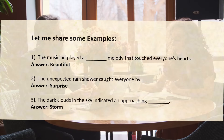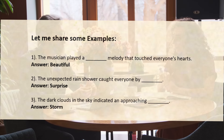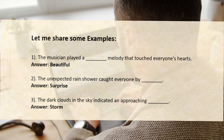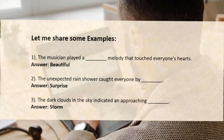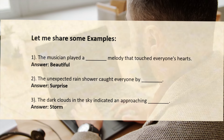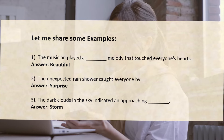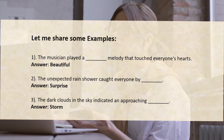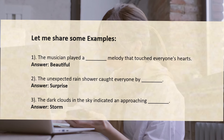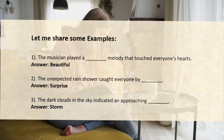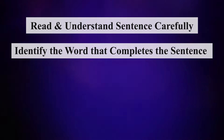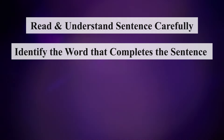Let me share some examples. Example one: 'The musician played a ___ melody that touched everyone's heart.' There could be multiple answers here — the answer could be 'beautiful.' Example two: 'Unexpected rain shower caught everyone by ___.' The answer is 'surprise.' Example three: 'The dark clouds in the sky indicated an approaching ___.' The answer is 'storm.' Now, tips for this section: take your time to read and understand the sentence carefully, pay attention to the overall meaning and context, and try to identify the word that completes the sentence.